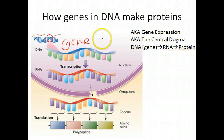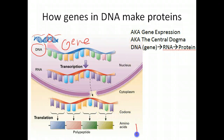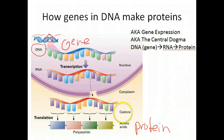Through gene expression, this whole section 4 of chapter 11 is about how you get from the information in your DNA all the way down to the protein level. We're going to break it down step by step — how you get from a gene in your DNA to a protein.